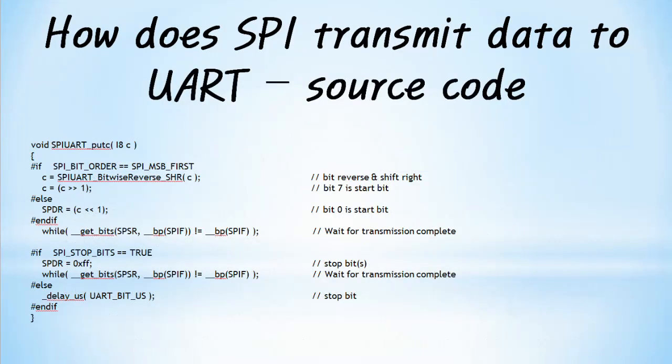The SPI_UART_PUTC function is used to send one character to the UART using SPI. This function supports both MSB first and LSB first SPI. If the character is transmitted using MSB first SPI, the SPI_UART_bitwise_reverse_SHR function is called to write the return data to the SPI transmit register. SPI_UART_bitwise_reverse_SHR performs bitwise reverse and shift write of input data. When LSB first SPI is used, the input character is shifted left by 1 bit and written to the SPI transmit register.